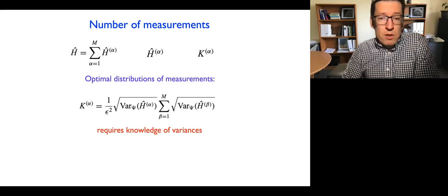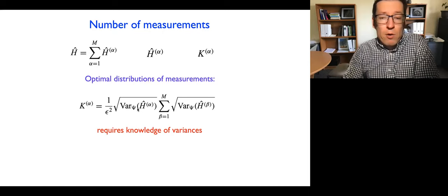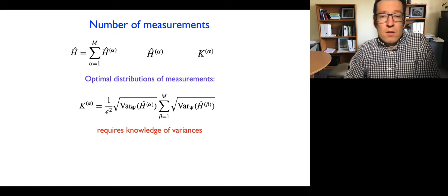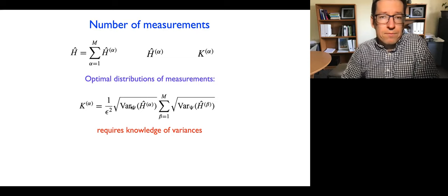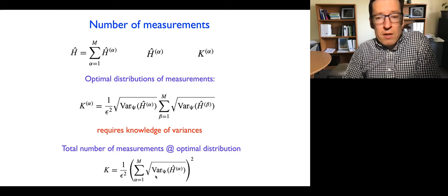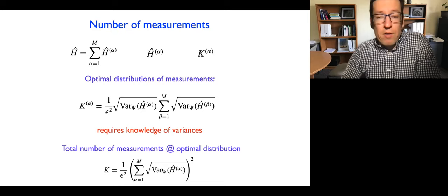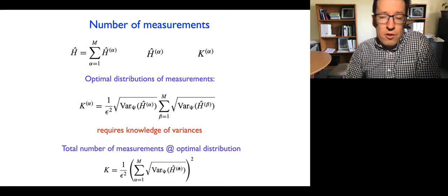To distribute measurements optimally you need to know the variances in advance. You can either acquire variance information along the measurement process, or use some approximation for the wave function such as Hartree-Fock or configuration interaction singles and doubles — something simple to do on a classical computer. The total number of measurements grows with the sum of variances of the individual fragments. An interesting feature of this expression is that for a fixed total variance, a non-uniform distribution across groups — for example, ten and zero rather than five and five — always gives fewer total measurements than a uniform distribution.